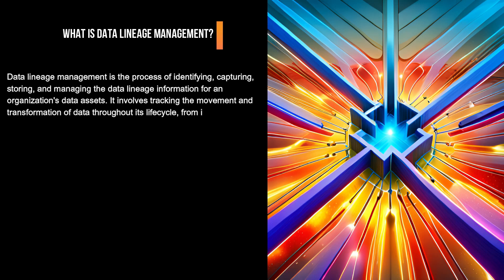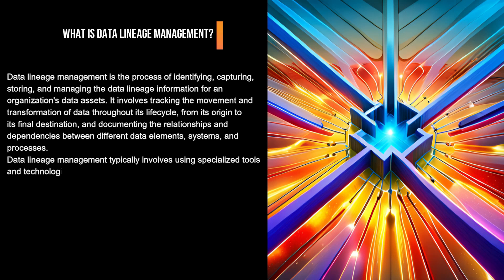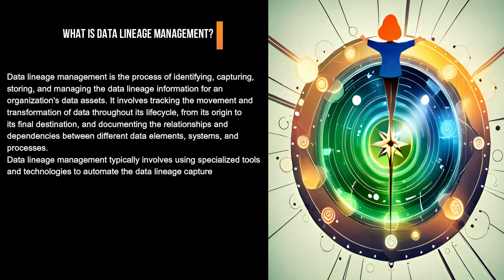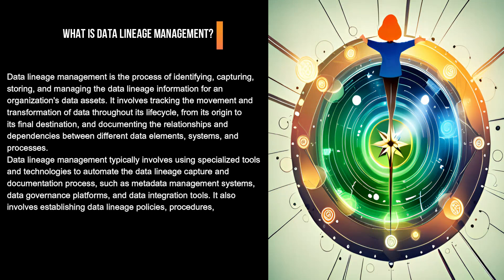It involves tracking the movement and transformation of data throughout its life cycle, from its origin to its final destination, and documenting the relationships and dependencies between different data elements, systems, and processes. Data Lineage Management typically involves using specialized tools and technologies to automate the data lineage capture and documentation process, such as metadata management systems, data governance platforms, and data integration tools.